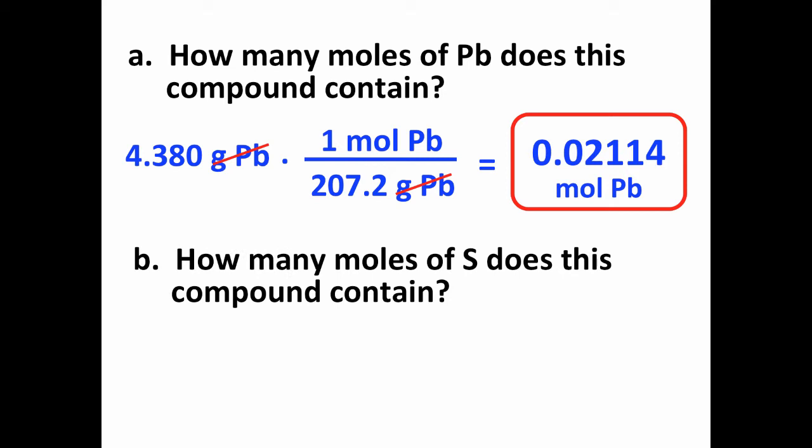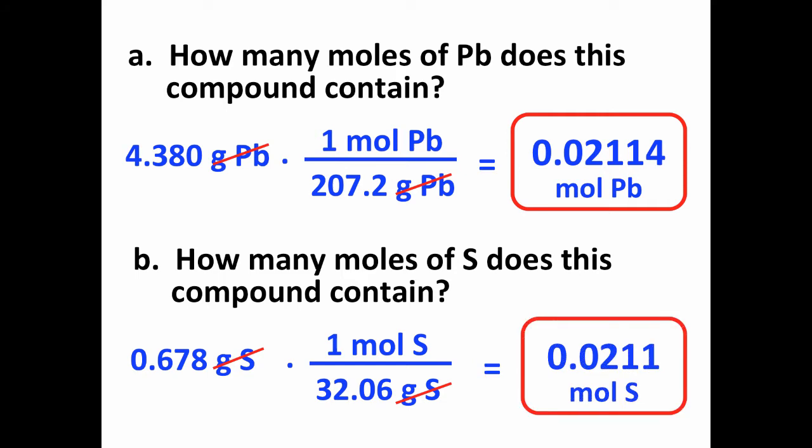Second part of this question: how many moles of sulfur does the compound contain? We do this in pretty much the same way as the previous part, we just have different numbers because we have a different substance. So we have 0.678 grams of sulfur, and the atomic mass of sulfur is 32.06 grams. One mole of sulfur weighs 32.06 grams. We want grams of sulfur to cancel, and when we do the math we get 0.0211 moles of sulfur in this compound.